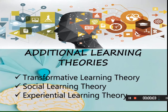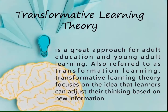Good morning everyone. Let me continue our topic with the additional learning theories. We have three additional learning theories. Number one is the transformative learning theory, number two is the social learning theory, and number three is the experiential learning theory. Transformative learning theory is a great approach for adult education and young adult learning, also referred to as transformation learning. It focuses on the idea that learners can adjust their thinking based on new information.